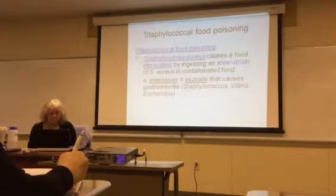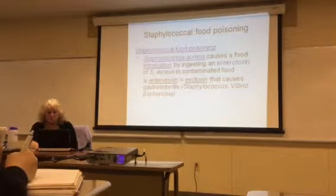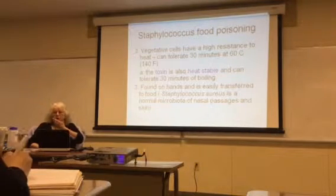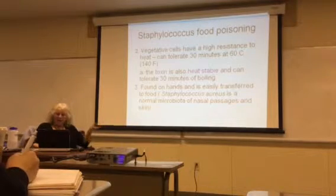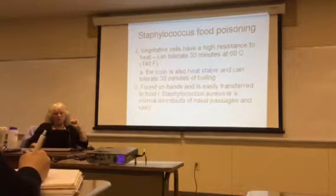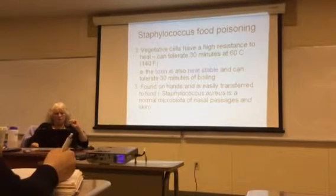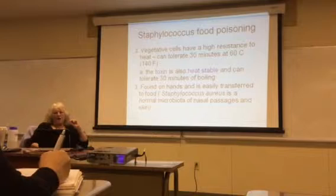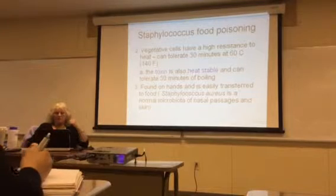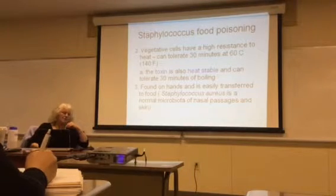Bacteria that cause enterotoxins — which are actually exotoxins affecting the GI tract — include Staphylococcus, Vibrio, Escherichia, and others. Staphylococcus is pretty hardy; the vegetative cells have a very high resistance to heat and can tolerate 30 minutes at 60°C, which is 140°F. The toxin they produce is also heat stable and can tolerate 30 minutes of boiling, so you're probably not going to get rid of it in the food.